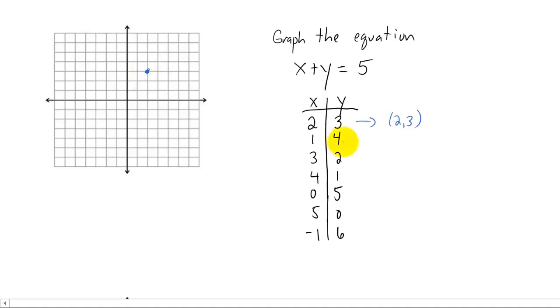Let's do the same thing for each one of these pairs. The pair one, four can be graphed right here. The pair three, two can be graphed right here. The ordered pair four, one is right here on the graph. The ordered pair zero, five is right here. The ordered pair five, zero. And the ordered pair negative one, six.